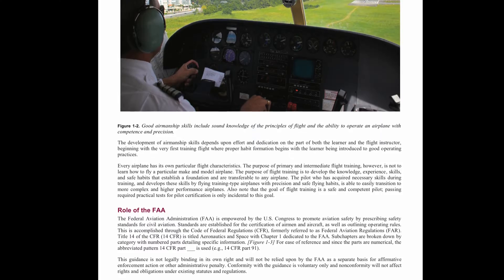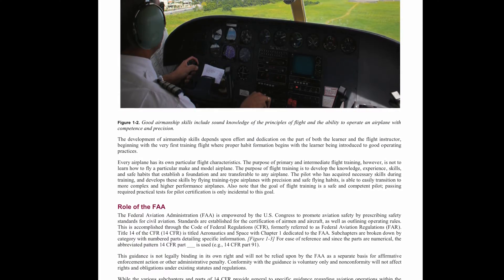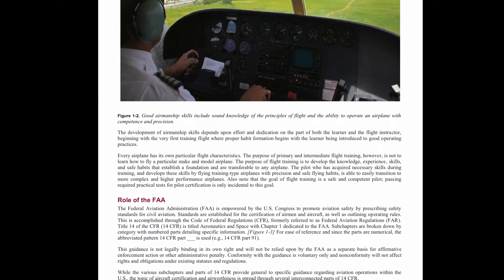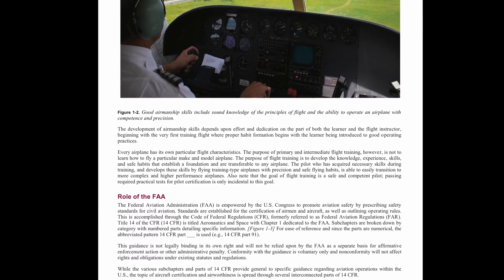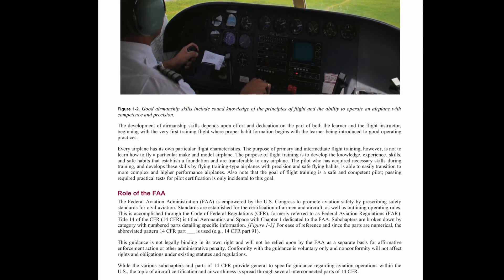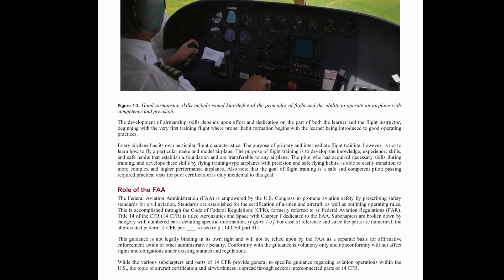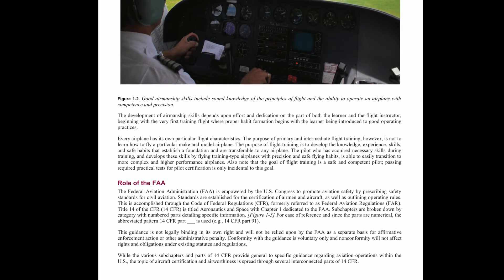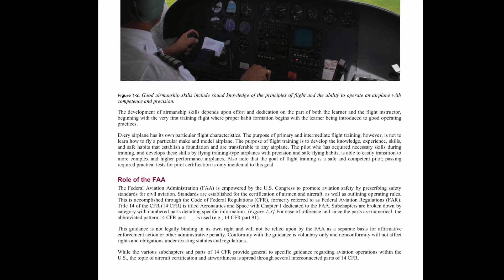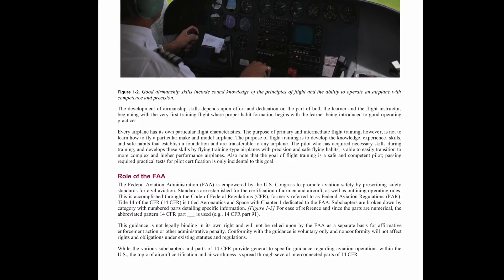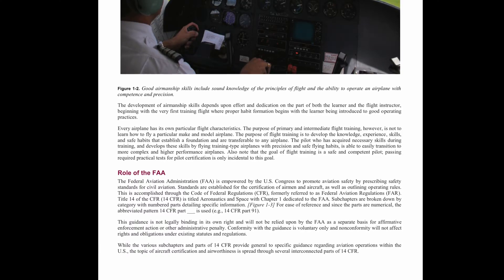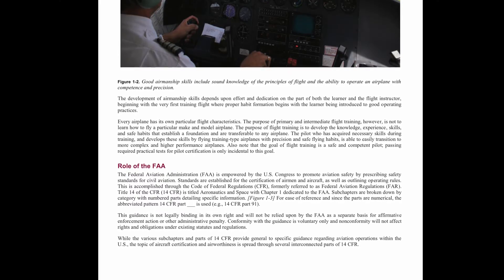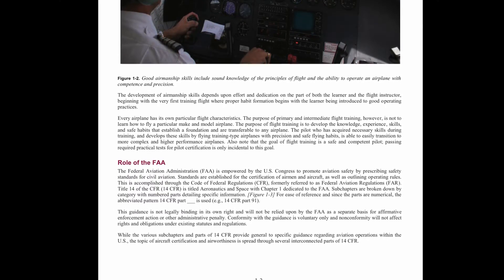Role of the FAA. The Federal Aviation Administration (FAA) is empowered by the U.S. Congress to promote aviation safety by prescribing safety standards for civil aviation. Standards are established for certification of airmen and aircraft, as well as outlining operating rules. This is accomplished through the Code of Federal Regulations (CFR), formerly referred to as Federal Aviation Regulations (FAR). Title 14 of the CFR (14 CFR) is titled Aeronautics and Space, with Chapter 1 dedicated to the FAA. Subchapters are broken down by category with numbered parts detailing specific information.